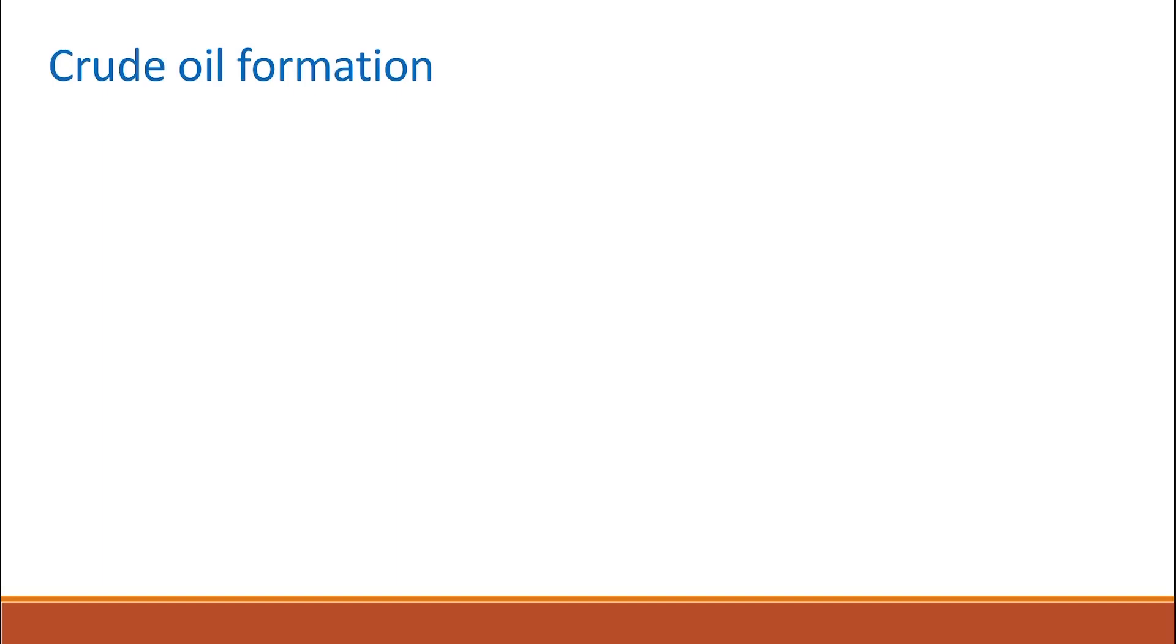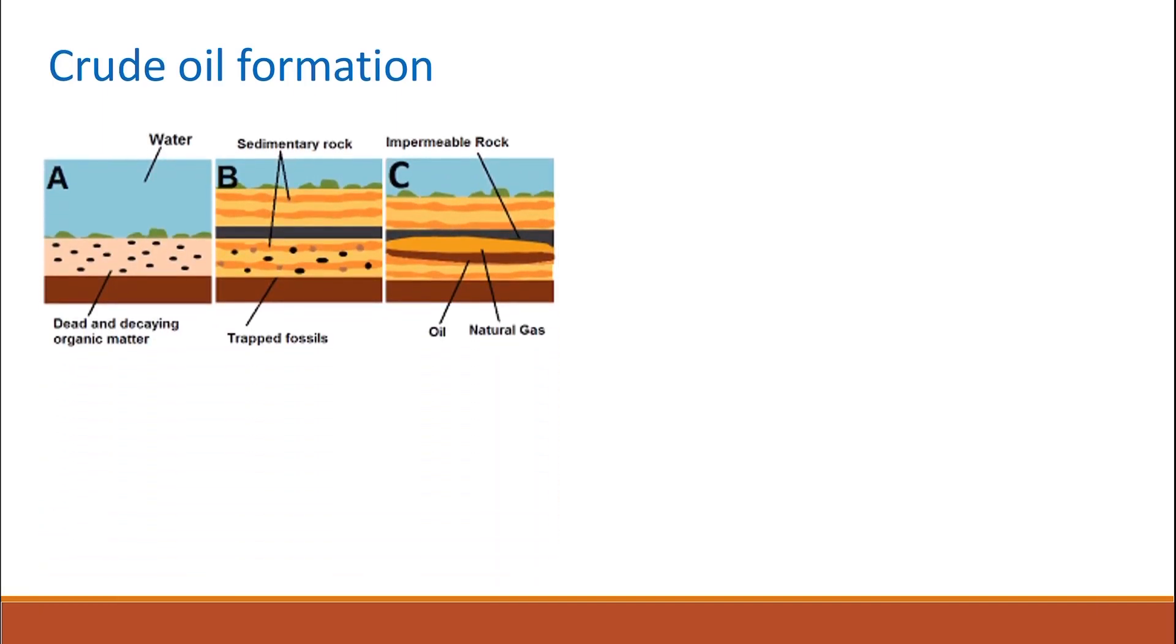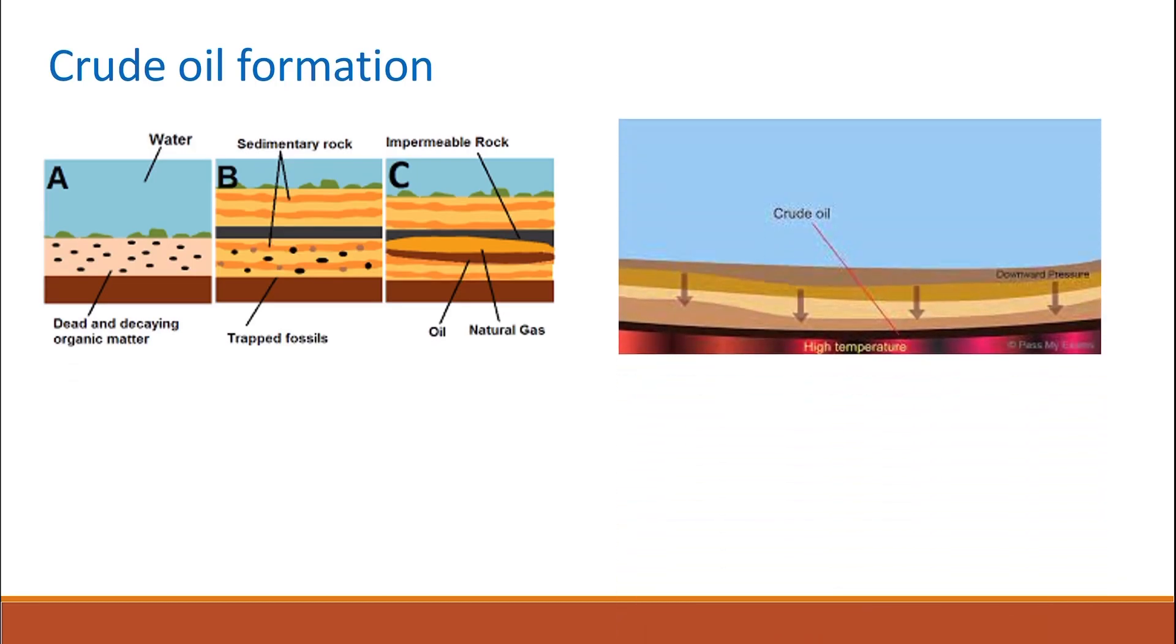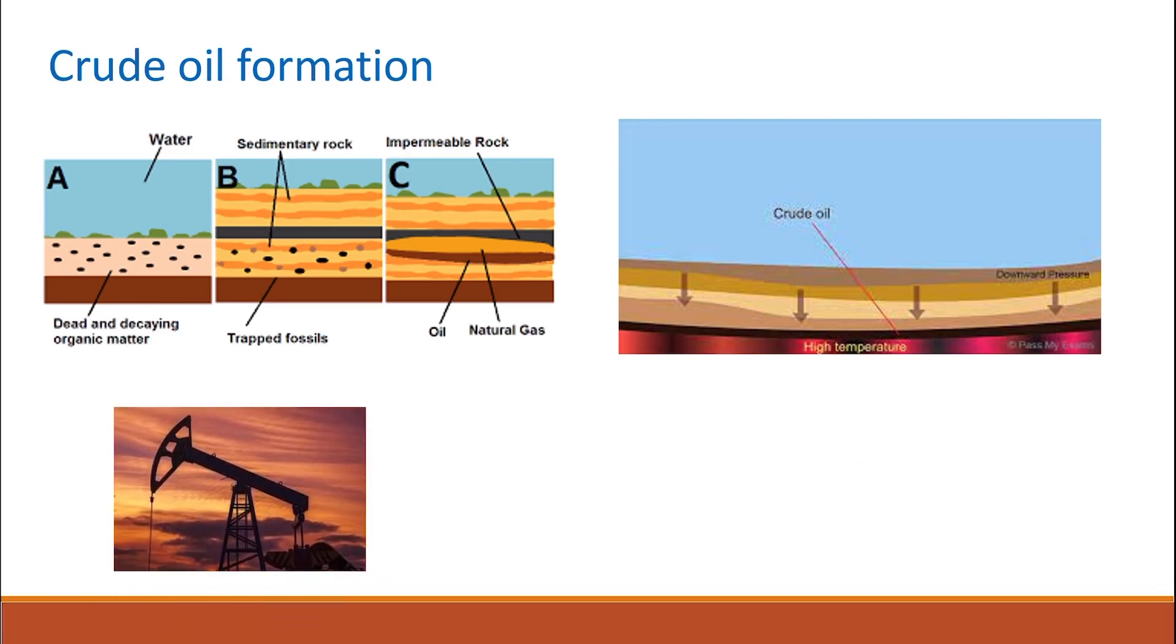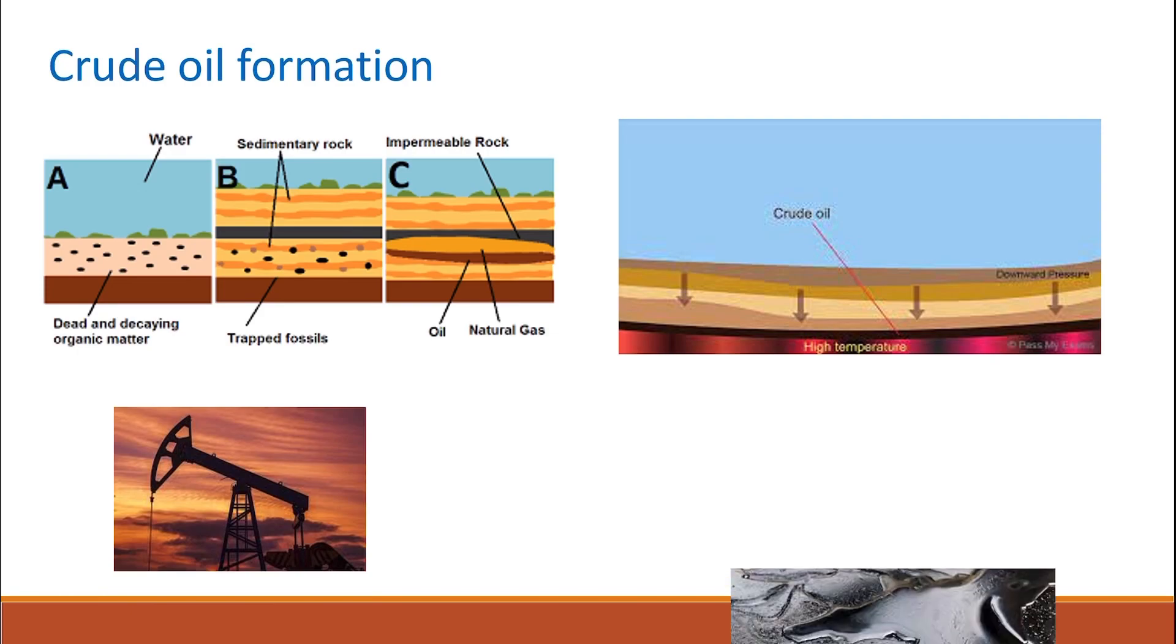Crude oil is a fossil fuel formed from the remains of plants and animals that died millions of years ago and were buried in mud or under water. Over millions of years, with high pressure and temperature, the remains turned into crude oil, which can be drilled up from the rocks where it's found.